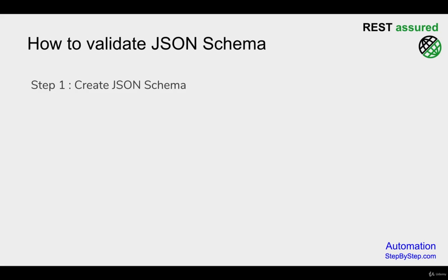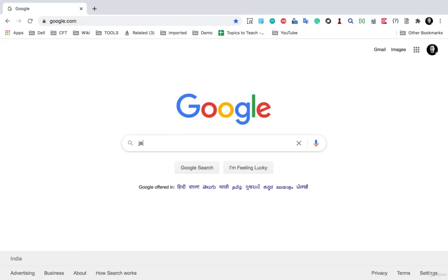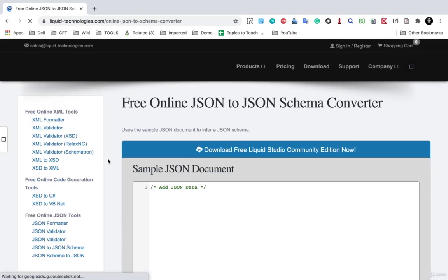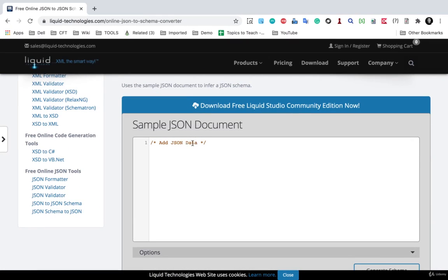Step number one is we have to create a JSON schema. In case you watched the last video, we discussed what JSON schema is and how you can create one. In most cases you will get a JSON schema from the creators or developers of the API. But for our demo, we will create one using an online tool. I'll go to Google and search for 'JSON to JSON schema converter' and use the link that comes up.